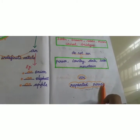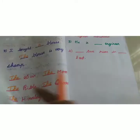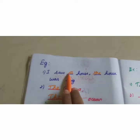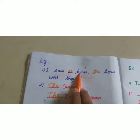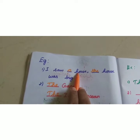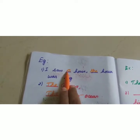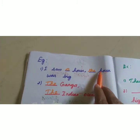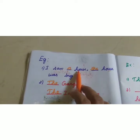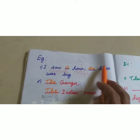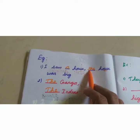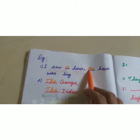We also use THE with repeated nouns — that is, when a noun is mentioned a second time. For example, in the first sentence: 'I saw a house.' H is a consonant, so we write A. The second time we refer to the same noun, we use THE. So: 'The house is right there.' When we use a repeated noun the second time, we write THE.